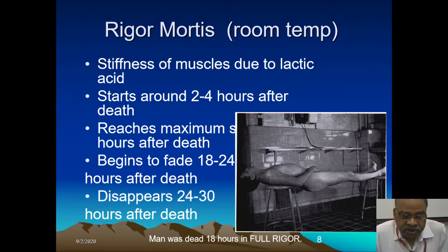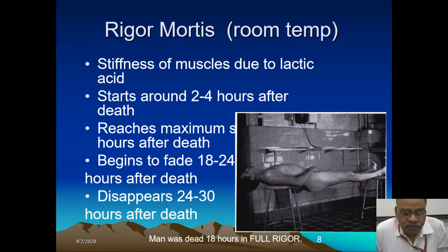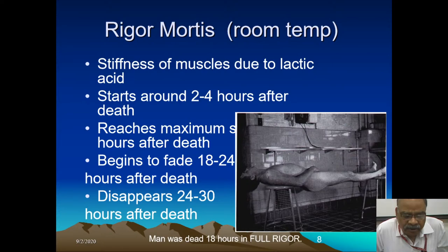Rigor mortis starts about one hour earlier in smaller muscles. In larger muscles, it can be appreciated in two to four hours after death, reaches maximum in twelve hours, and begins to fade by eighteen to twenty-four hours after death. In cold countries with temperatures below 20°C, it follows the rule of twelve: developing in twelve hours, starting to fade by twenty-four hours, and disappearing by thirty-six hours.